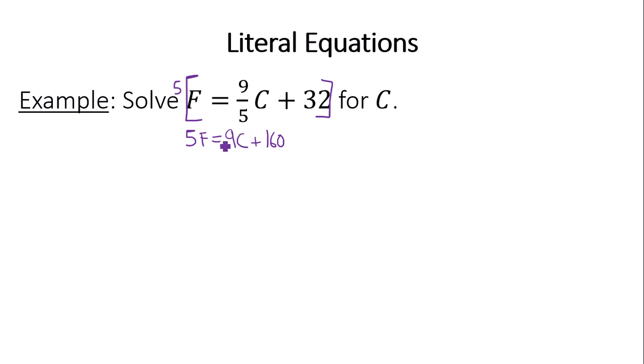Alright, so remember we're trying to get the 9C by itself first. So we're going to still take away that 160 from both sides. You cannot really combine 5F and 160 into one single term. You have to keep them separate. 5F minus 160 is equal to 9C.